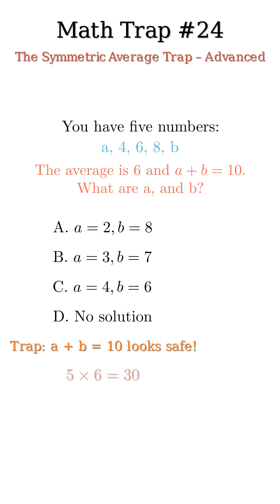If the average of five numbers is 6, the total must be 30. Now the known numbers add up to 18. So the unknowns A and B must add up to 12.